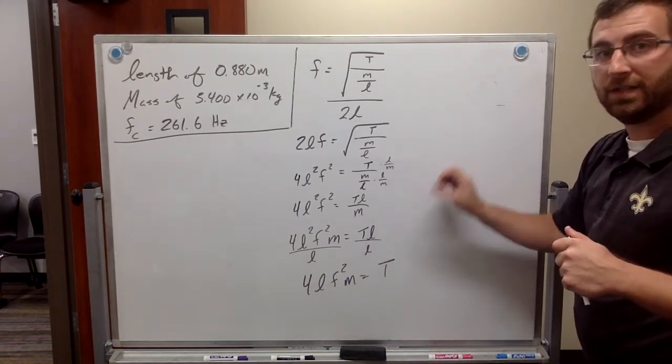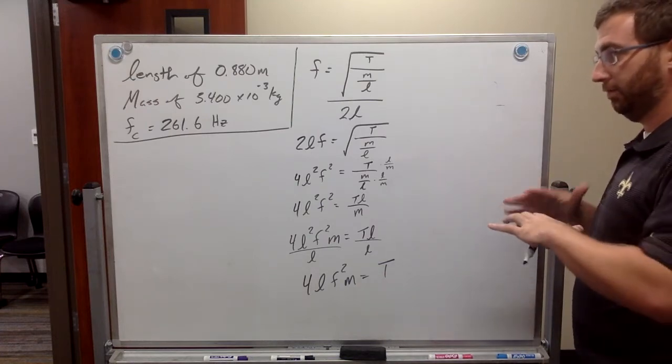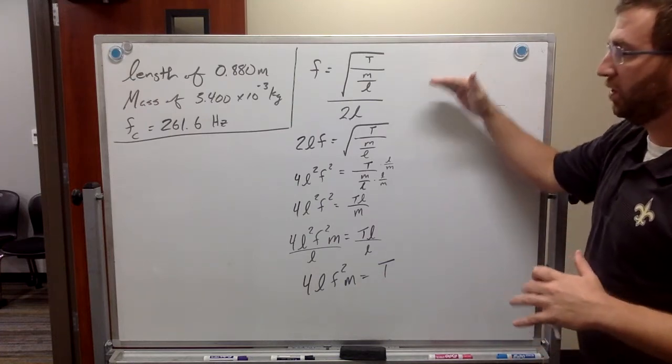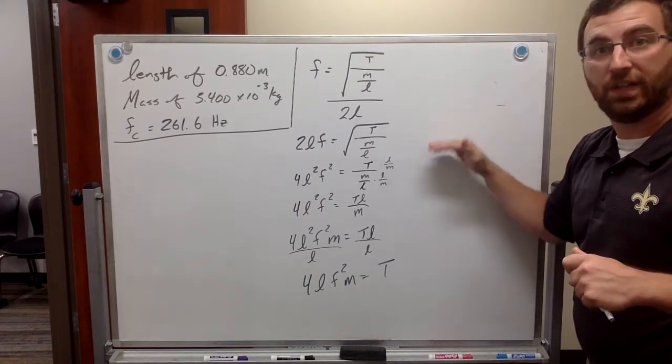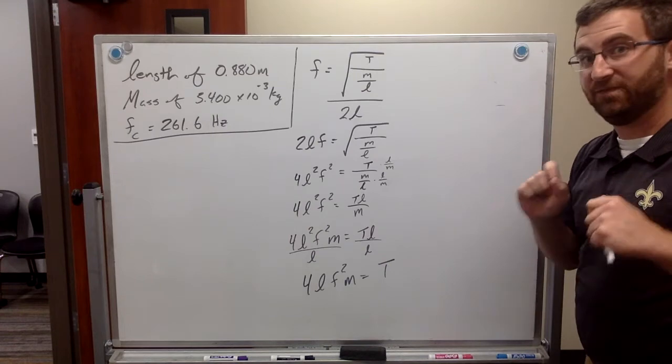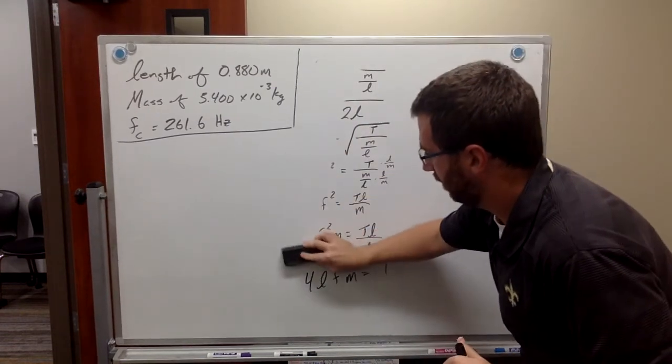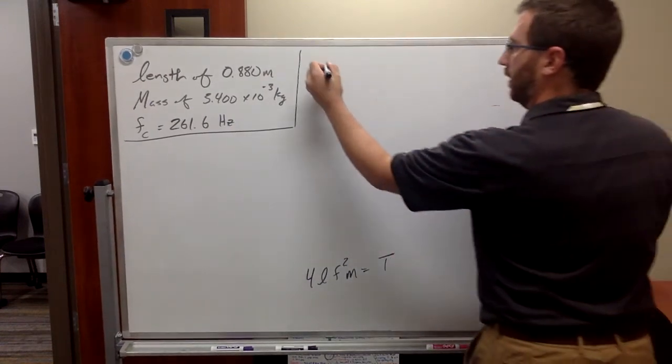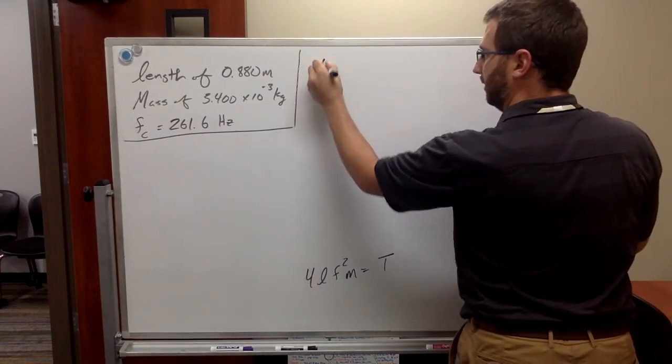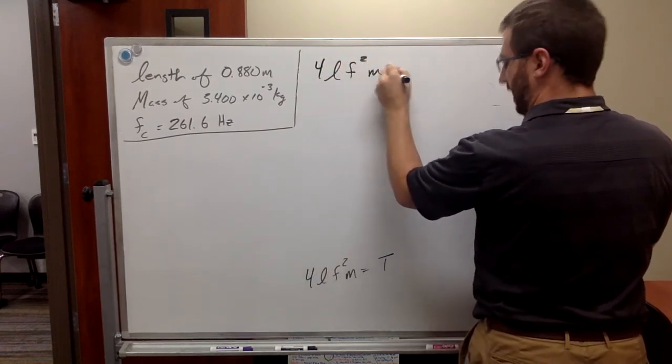Now, because I'm running out of board space, I'm going to have to erase all this wonderful and beautiful stuff. But, that's the formula I can now deal with, because I have the length, I have the frequency, which is 261.6, and I have the mass. So, now, all I have to do is find the tension. So, if you need to go back and review this, hit the rewind button, because I want to make sure you understand exactly where I got to, exactly each little piece I did. That's very crucial.